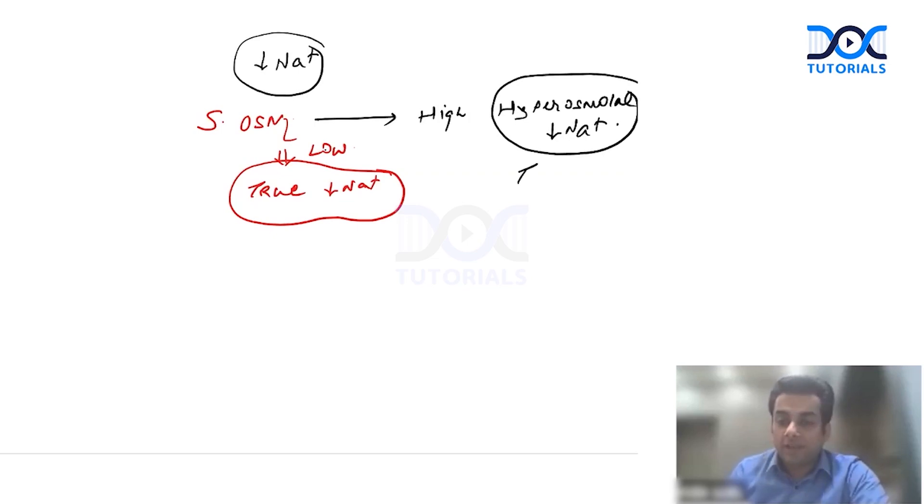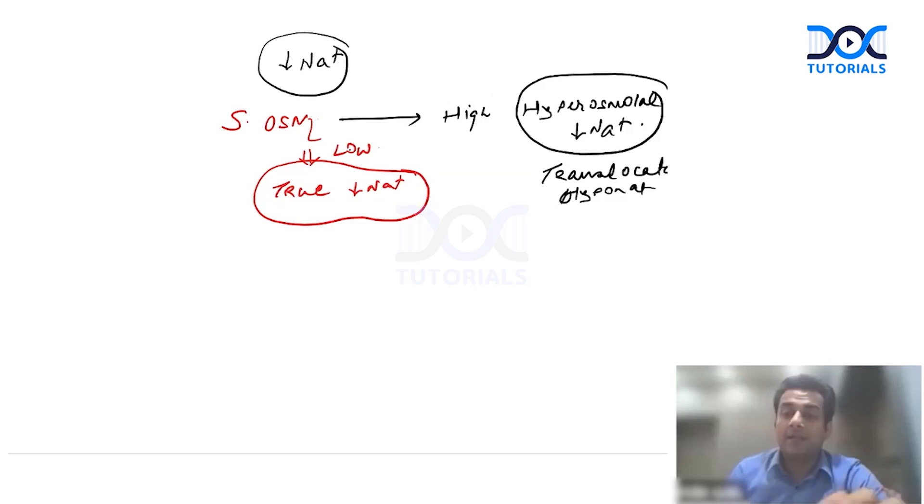If the serum osmolality is high, that is a case of hyperosmolal hyponatremia which actually occurs in a patient of translocational hyponatremia, where an osmotically active substance may be present in the blood which has caused the transcellular shift of water. That can be in the case of excess of glucose, that can be when you have given mannitol, that can be in presence of any hyperosmolar substance.